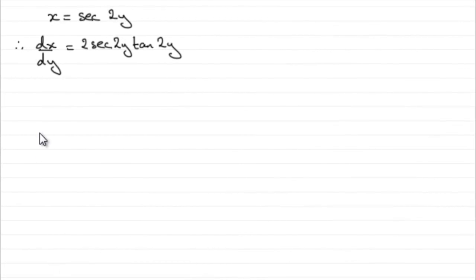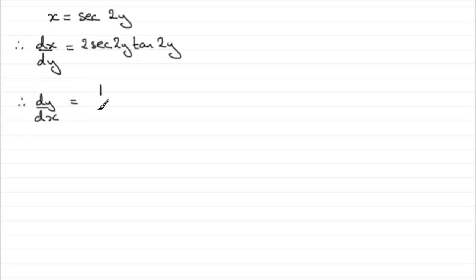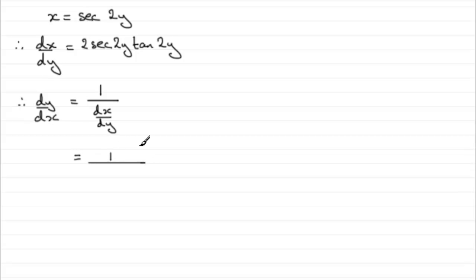Now for this part, we've got to find dy/dx in terms of x. To do this, what we would do is go back to this particular result: that dy/dx is the same as 1 divided by dx/dy. The result that we should know. So that's going to mean that what we've got here is that this is equal to 1 divided by 2sec(2y)tan(2y).